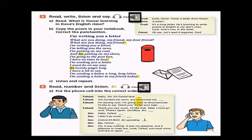Okay. Let's move to exercise 3. Read, write, listen, and say. Read. What is Yassir learning in Dave's English class. Copy the poem in your notebook. Correct the punctuation. Let's start listening. Lesson 2, the wrong present. Exercise 3. Read, write, listen, and say.